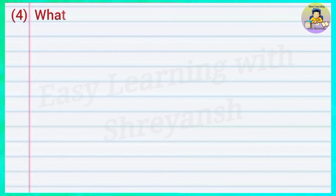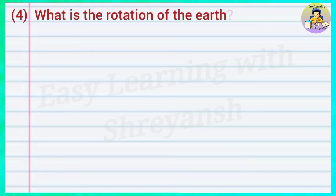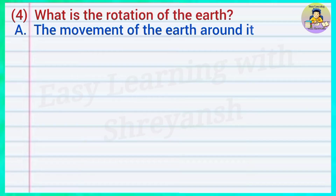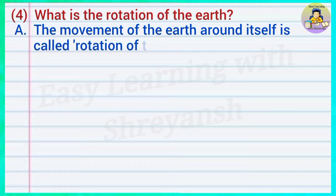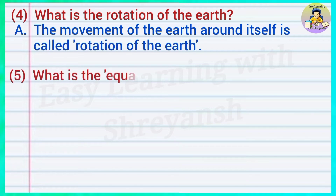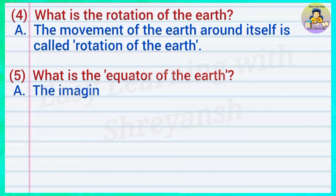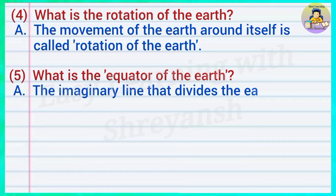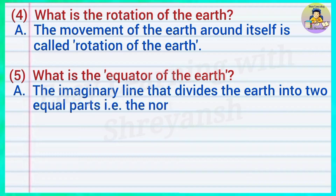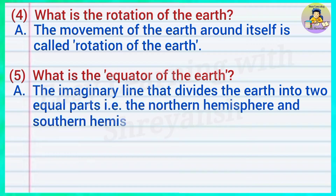Four — what is the rotation of the earth? Answer: The movement of the earth around itself is called rotation of the earth. Five — what is the equator of the earth? Answer: The imaginary line that divides the earth into two equal parts — the northern hemisphere and the southern hemisphere — is called the equator of the earth.